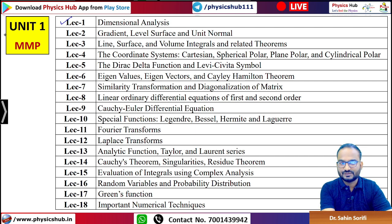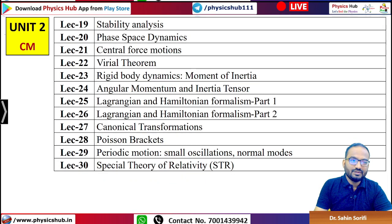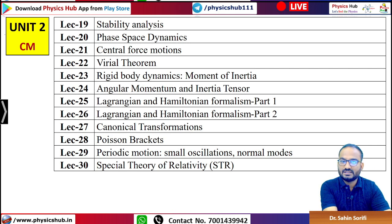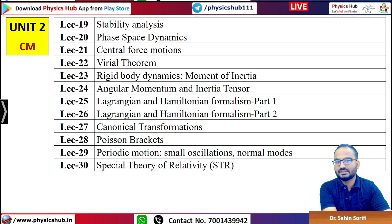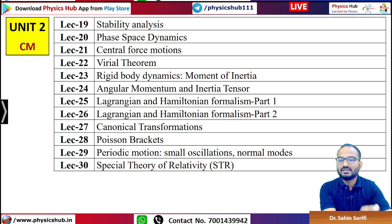Unit 2 is Classical Mechanics. It starts with stability analysis, phase space dynamics, central force motion, virial theorem, rigid body dynamics, angular momentum, Lagrangian and Hamiltonian mechanics, canonical transformation, Poisson brackets, periodic motion, small oscillations, normal modes, and special theory of relativity.